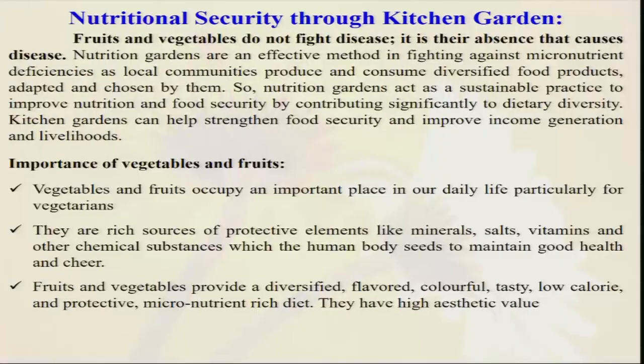For example, coriander leaf cannot be stored for five to six days, but curry patta leaf is needed for daily cooking procedures. All these leafy vegetables — amaranthus, leafy mustard — we always want to take fresh from the farm so that we can use them for cooking. Fruits and vegetables do not fight disease, but it is their absence that causes disease. We always have to take these types of nutrients so that our defense mechanism will be present.